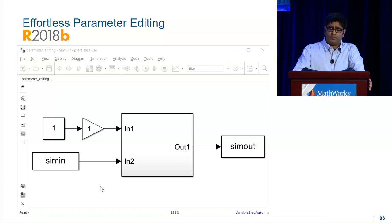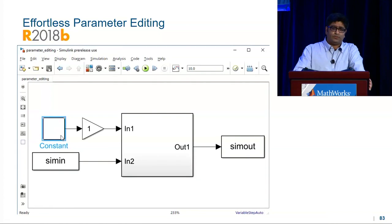You can edit parameters with block dialogues, and you can edit them with the property inspector. But the question we ask ourselves is, can we do better? So in 18B, you can edit parameters wherever you see them. You see a constant, you can change it. You see a gain, you can change that too. From and to workspace blocks, absolutely not a problem.